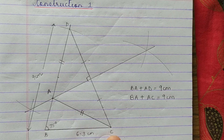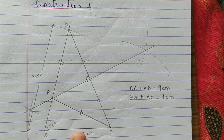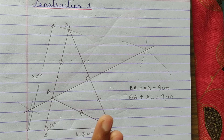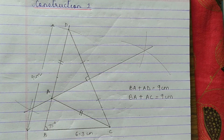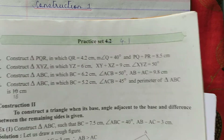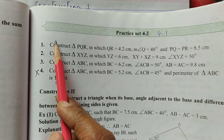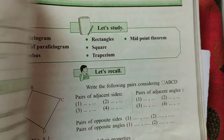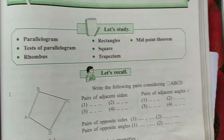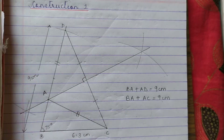Children, I hope you have understood this construction. You need to draw the rough figure and write the explanation as given in the textbook. The one I have done is a solved example in your textbook. Now you are going to do exercise 4.1, question numbers 1, 2, and 3. Question number 4 is deleted. So the first 3 questions will be your homework. And you can also start problem set 4 — the first question is exactly the same as this particular construction. That is all for today, children. Thank you.